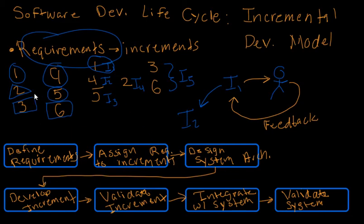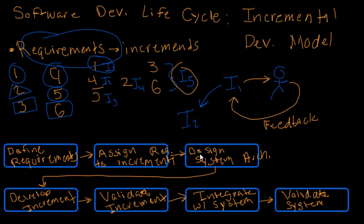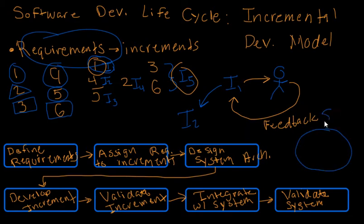Let's walk through the full cycle with our example. We define requirements one through six, then assign them to increments: one to increment one, four to increment two, five to increment three, two gets its own, and three and six go into increment five. We design the system architecture for each increment, then develop increment one. We validate it, confirming it meets the requirements for requirement one.